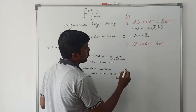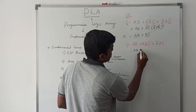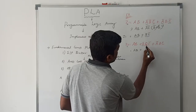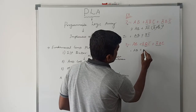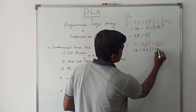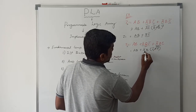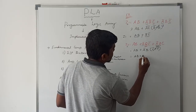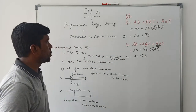Now for Z2: Z2 = AB + A̅BC̅ + A̅BC. In the last two product terms, A̅B is common — take it out: A̅B(C̅ + C). Since C̅ + C = 1, this simplifies to A̅B. So Z2 = AB + A̅B.